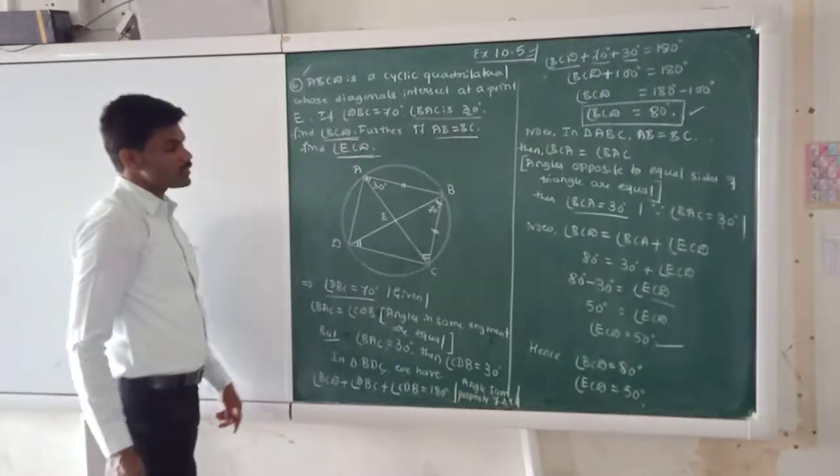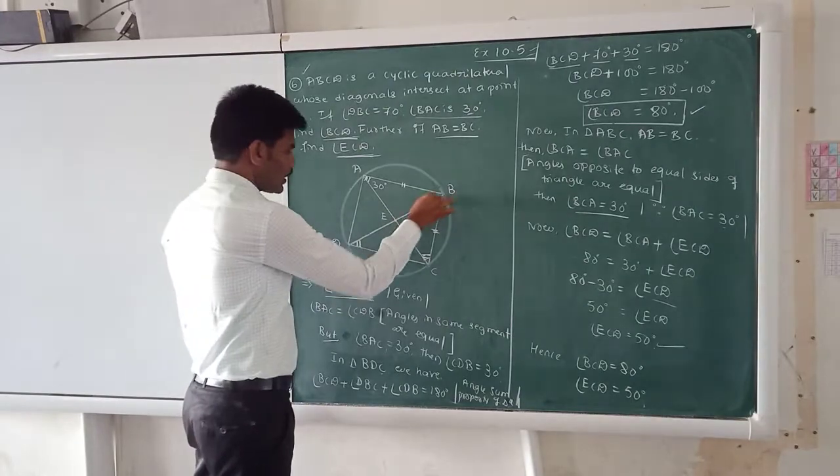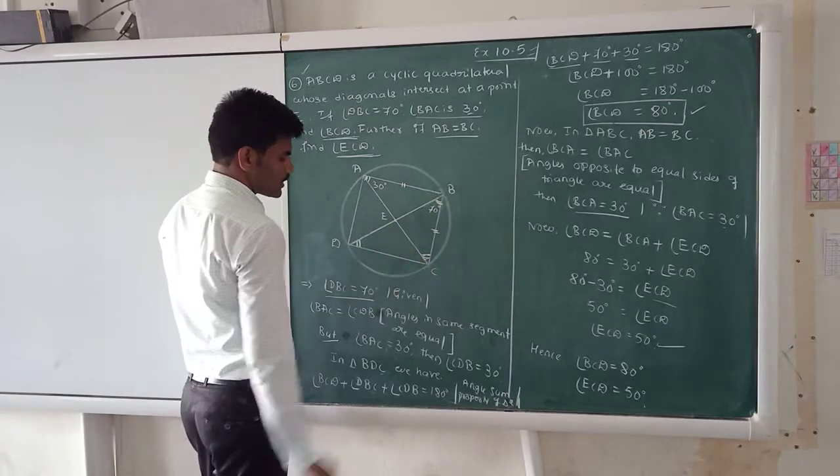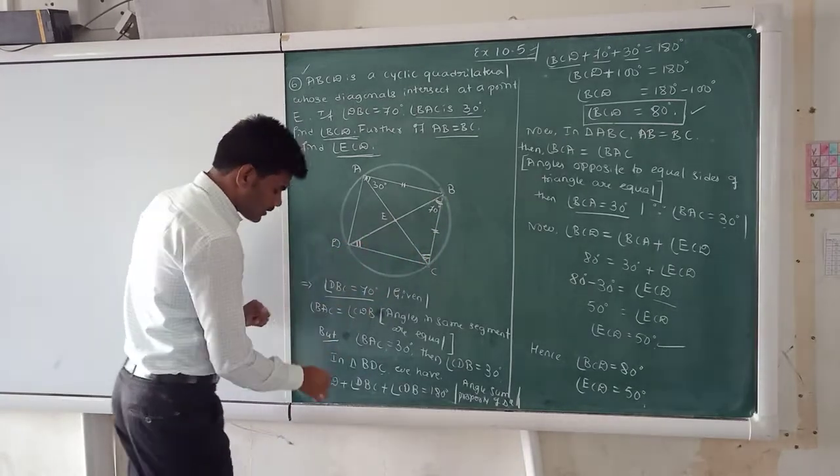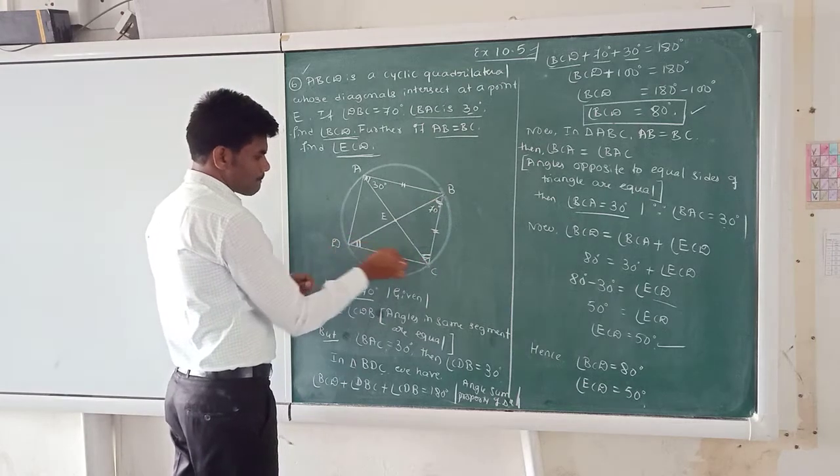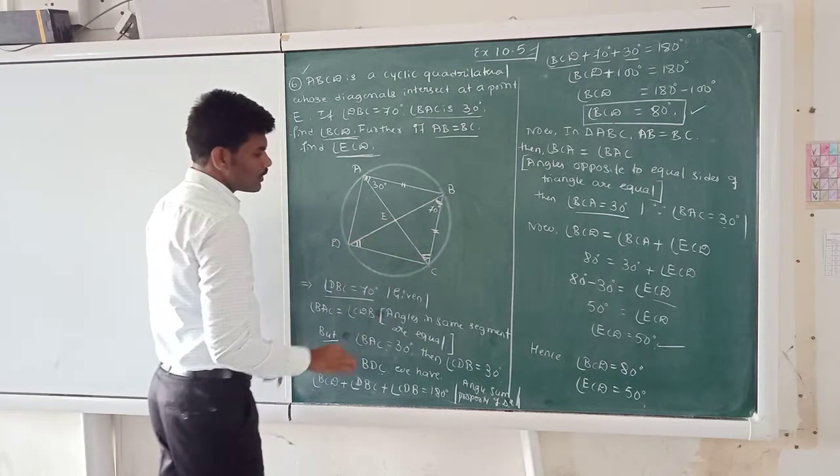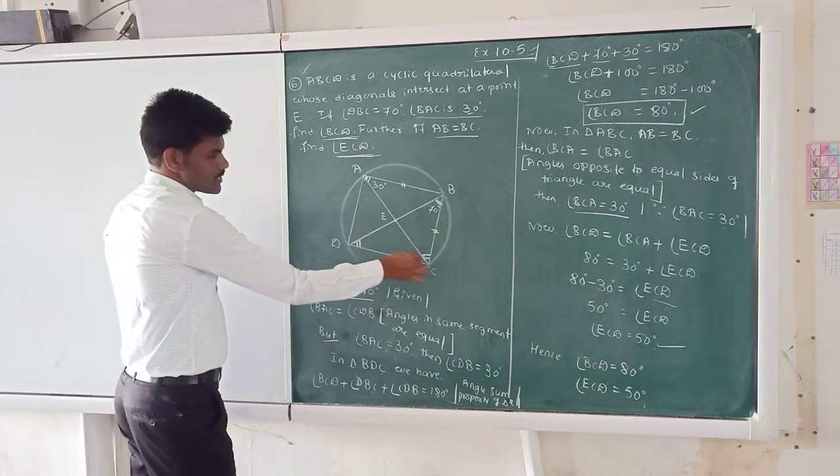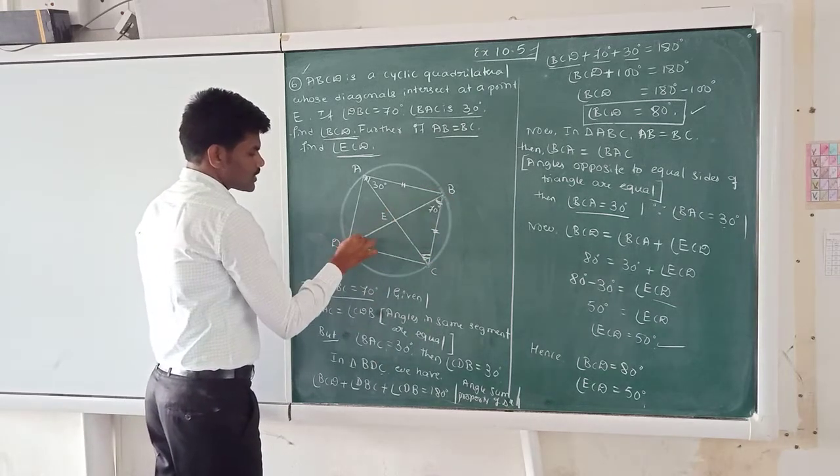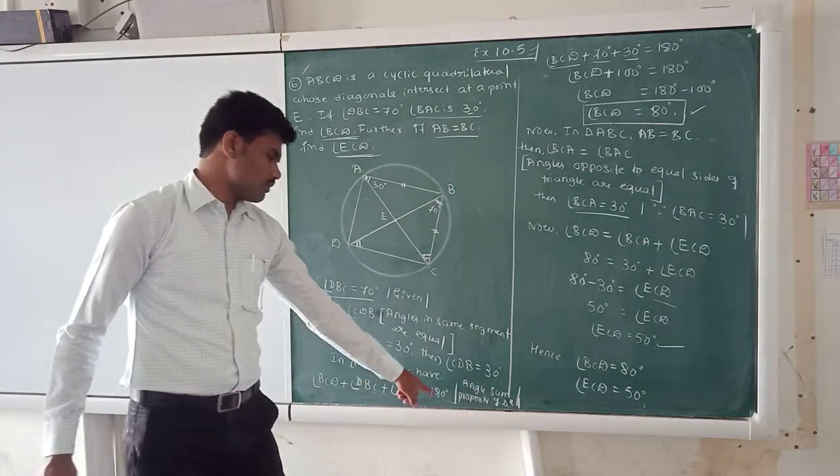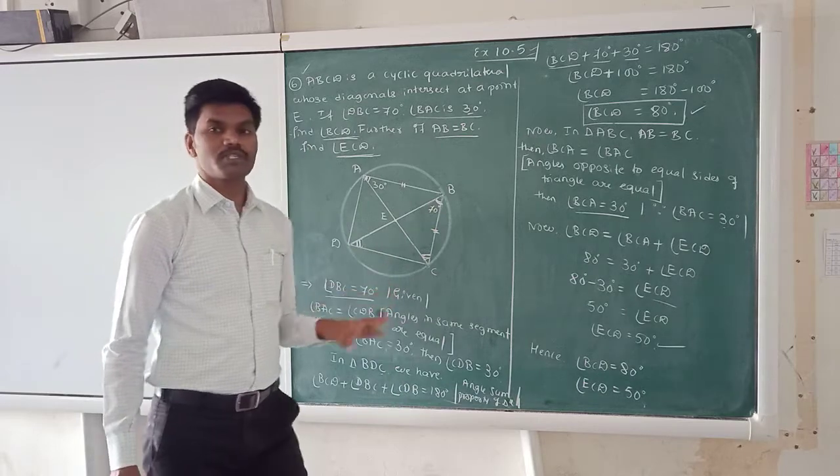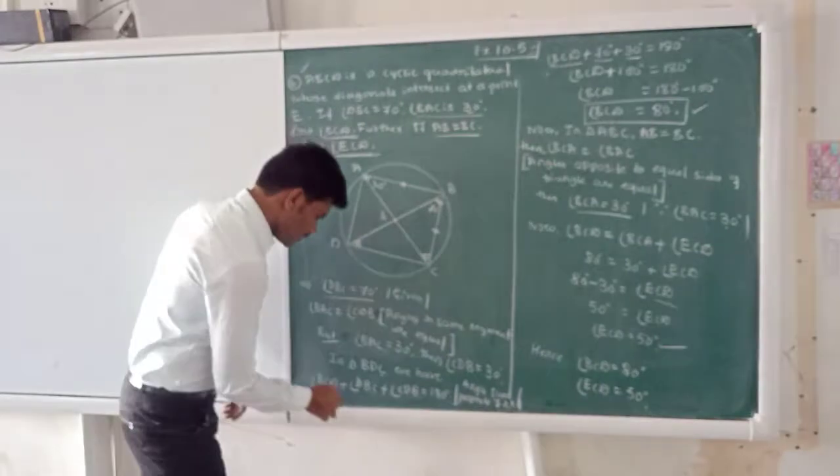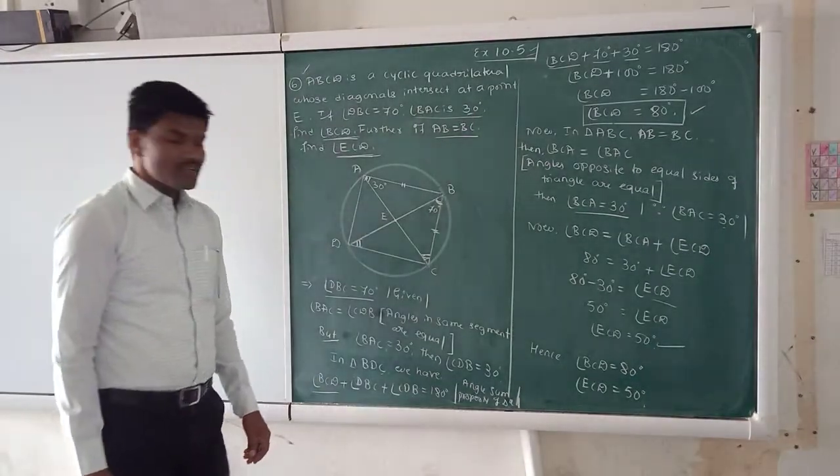Okay, so, we need to take the triangle EDC. Observe carefully, it is triangle EDC. In that triangle, the angle ECD, this full angle, right? Angle DBC, this angle plus angle CDB is equal to 180 degrees we can call, because the angle sum property of the triangle is always equal to 180 degrees. But, we do not know the value of angle BCD. So, what we need to do?